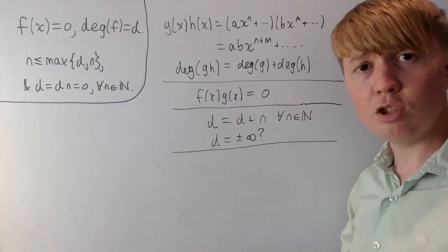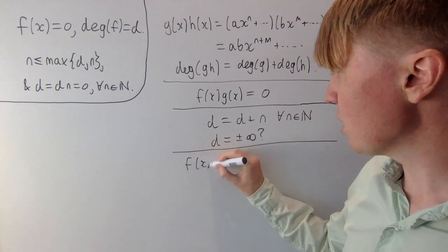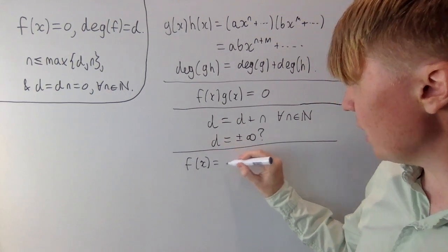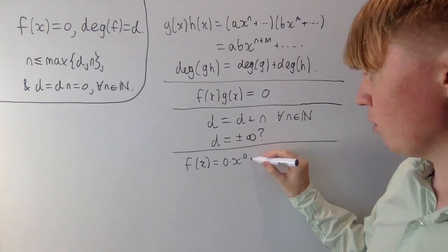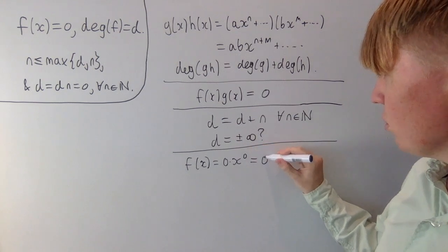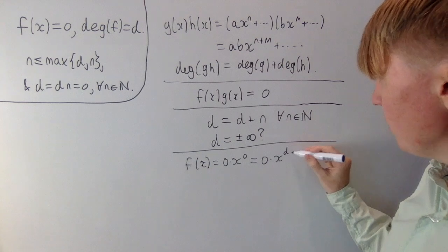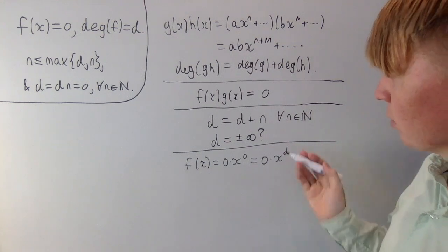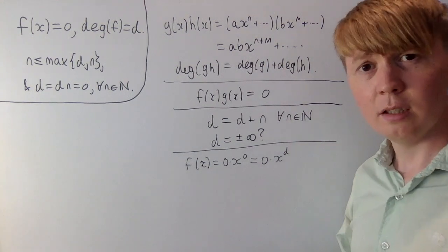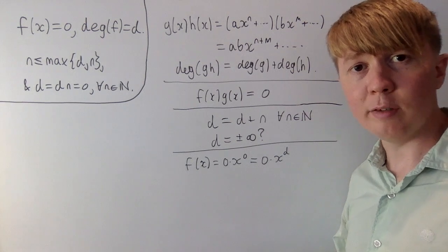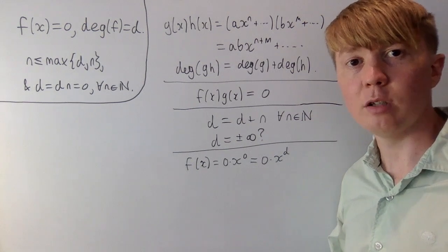Intuitively, we can think of the degree of the zero polynomial as zero because it is zero times x to the zero. But you could also write this as zero times x to the d for any power of d — even negative infinity could arguably work. So there's no way we can assign one single value to the degree of the zero polynomial.